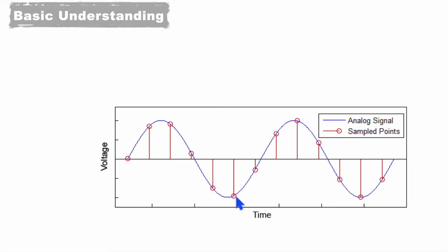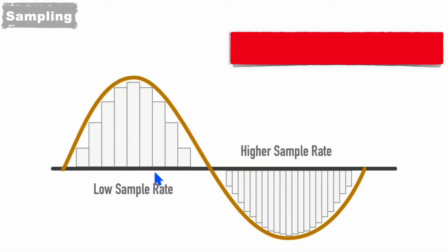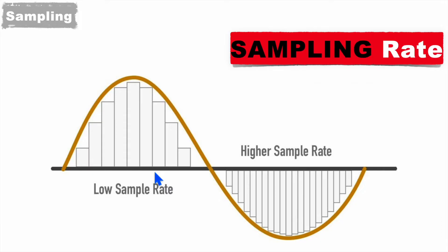To track the analog signal in a better way, we must have sample points at very high frequency. On the left side you can see the sampling rate is low, and with this approach we can track the analog signal but not very efficiently. To track it efficiently we can use a higher sampling rate — a higher sampling frequency — so that we can have more and more sample points. On the right side you can see there are far more sample points compared with the left side with the lower sampling rate.